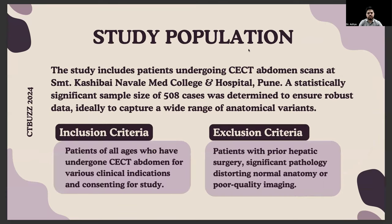The study includes patients undergoing CCT abdomen scans at Srimati Kashibai Navale Medical College. A statistically significant sample size of 508 cases was determined to ensure robust data and ideally to capture a wide range of anatomical variants. The inclusion criteria were patients of all ages who underwent CCT abdomen for various clinical indications and consented to the study. The exclusion criteria were patients with prior hepatic surgery, significant pathology that distorted normal anatomy, or any poor quality imaging.